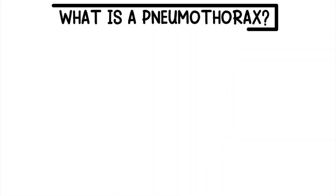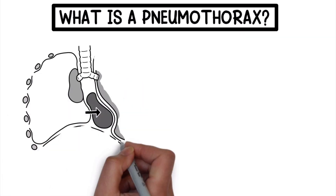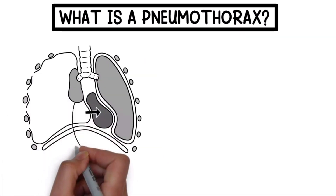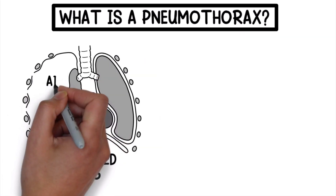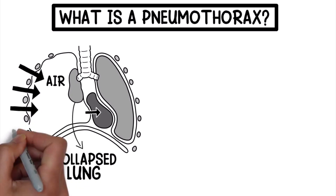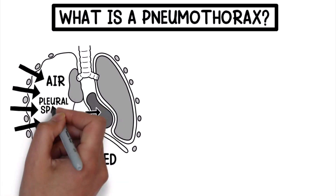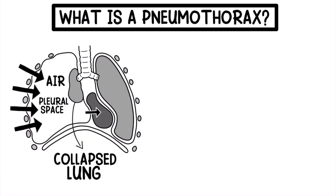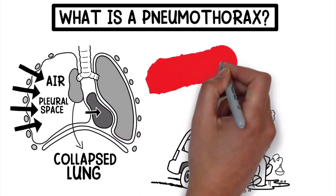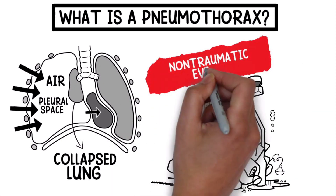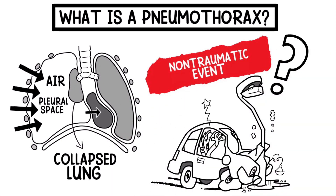What is a pneumothorax? Medically speaking, it's a term that is often referred to as a collapsed lung. It occurs when air leaks into the pleural space, which alters the pressure that keeps the lungs inflated. It could result from an open injury to the chest wall, or from a non-traumatic event in which the cause is unknown.